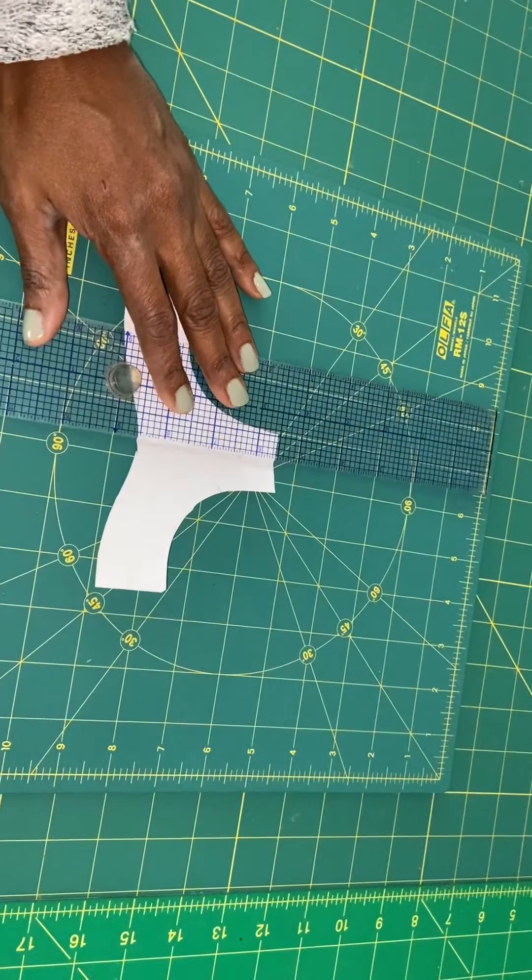So what happens is, you see how the wires, the three-eighths inch, will be right here. Like when the channeling folds over, they'll be right on top of each other here. They'll come up and at a point they will overlap.